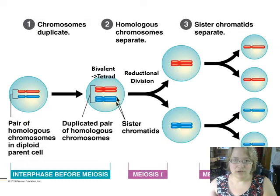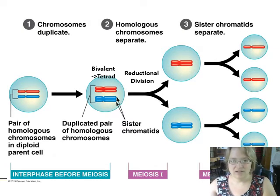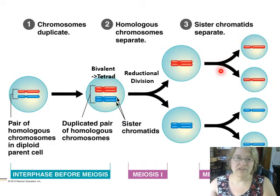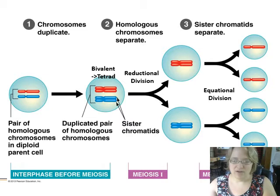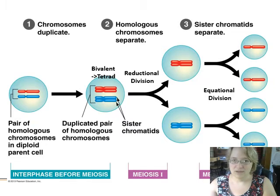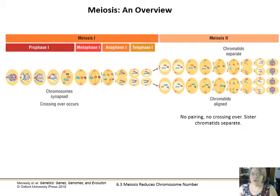Meiosis two is pretty much mitosis again — a simple equational division where the sister chromosomes are separating and getting pulled to opposite ends of the cell and new cells are forming. In this case we're taking haploid cells that had two copies and making them haploid cells that only have one copy. We have not changed the chromosome number in meiosis two; we've just separated those two copies into their own cells.